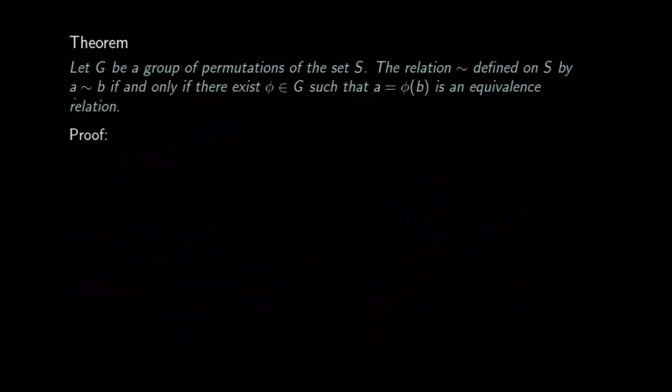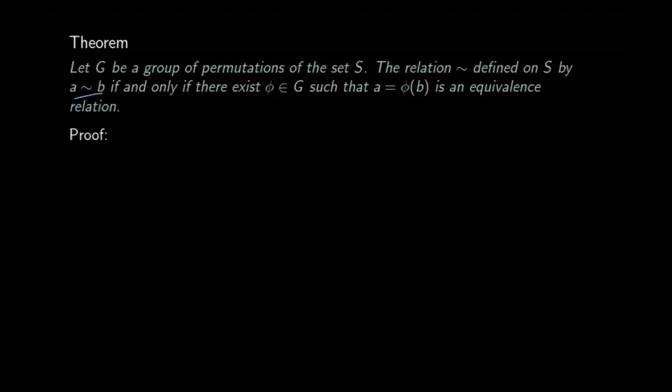Let us consider the relation defined on the set S by: a is related to b if there is some permutation φ in G such that a = φ(b). We will show that this relation is an equivalence relation.